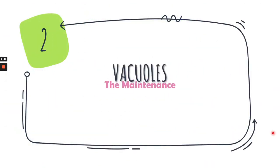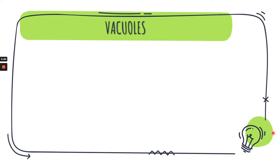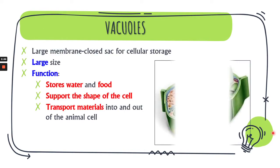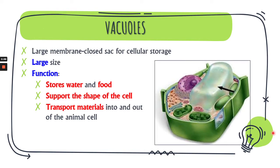The second organelle is the vacuole, also known as the maintenance organelle. Vacuoles are large membrane-enclosed sacs for cellular storage, and they are very large in size. The functions of vacuoles include storing water and food, supporting the shape of the cell, and also transporting materials in and out of animal cells.